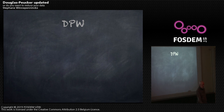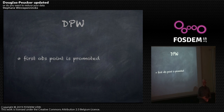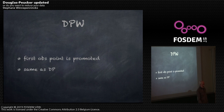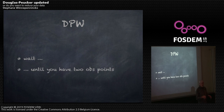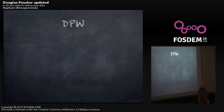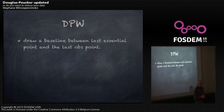When you start, your very first point — like when you have a company and you're the first one, you get promoted to CEO — the first observation point is immediately promoted to essential. For the rest, it looks like Douglas-Peucker. I wait until I have two observation points: I have an essential one and two observation points, then I apply something that looks like Douglas-Peucker. I draw a baseline between the last essential point and the last observation point.